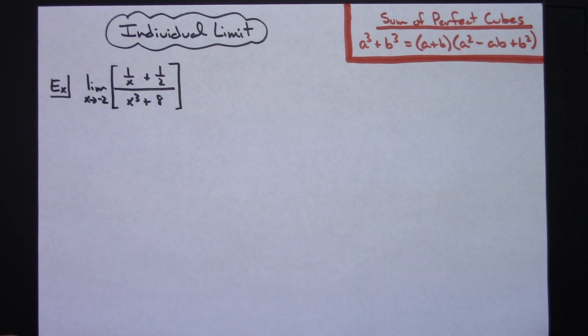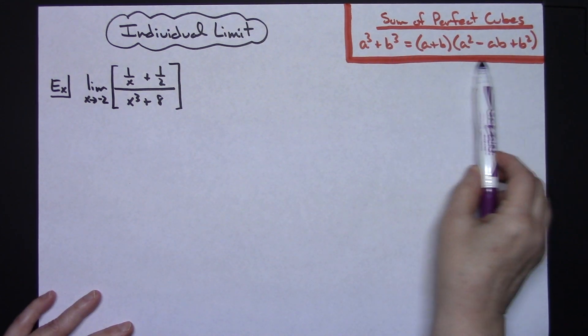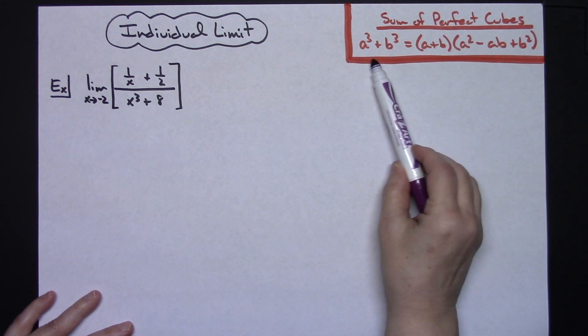In this video I'm going to work out an individual limit, basically just an algebraic approach. At some point in time I am going to use the factoring technique of the sum of two perfect cubes.